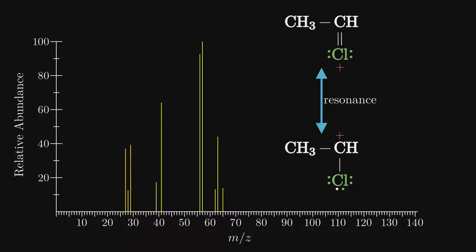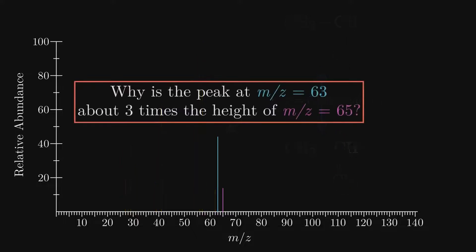The mass of this chlorocarbocation is 63, but notice how the peak at m/z 65 is about one-third the height. Can you think of an explanation as to why this is? If not, I suggest watching the previous video again.